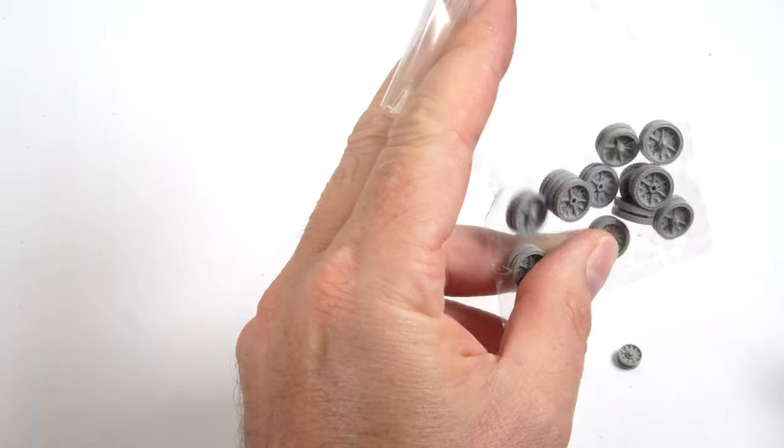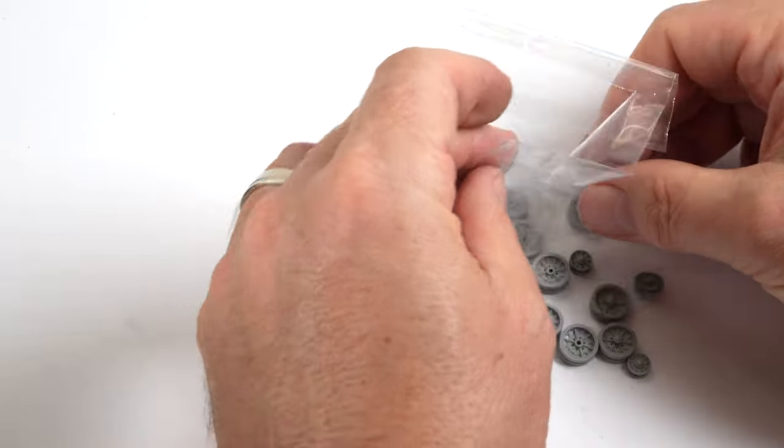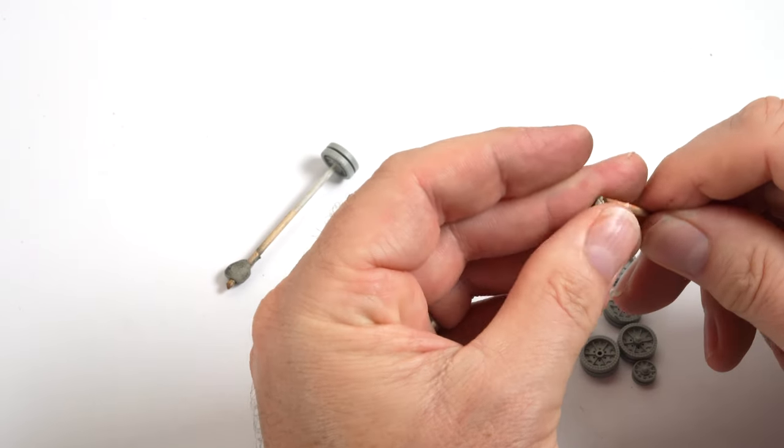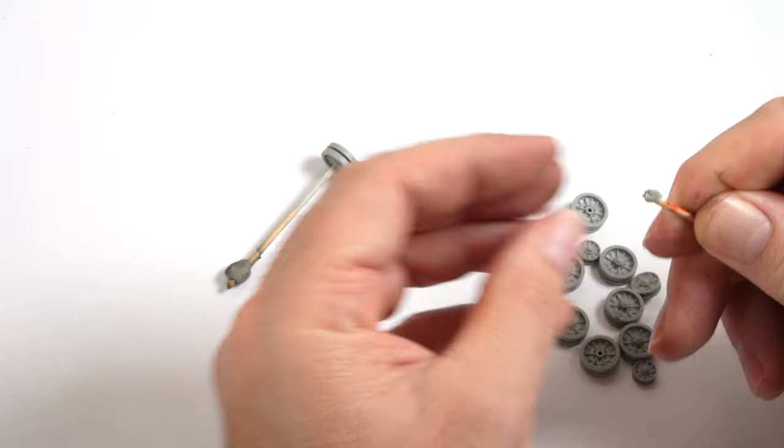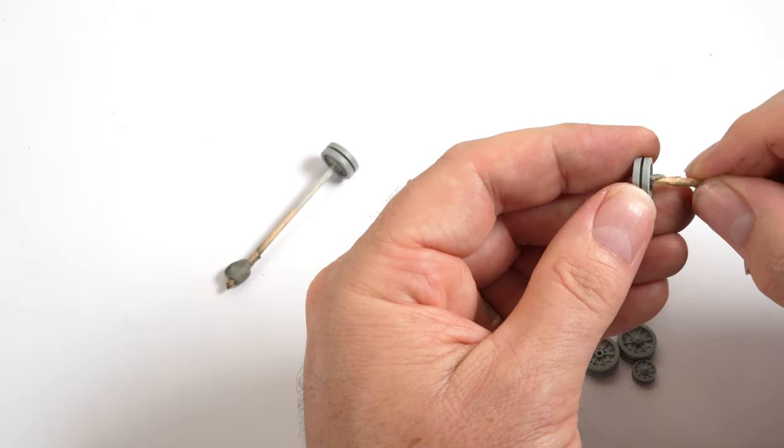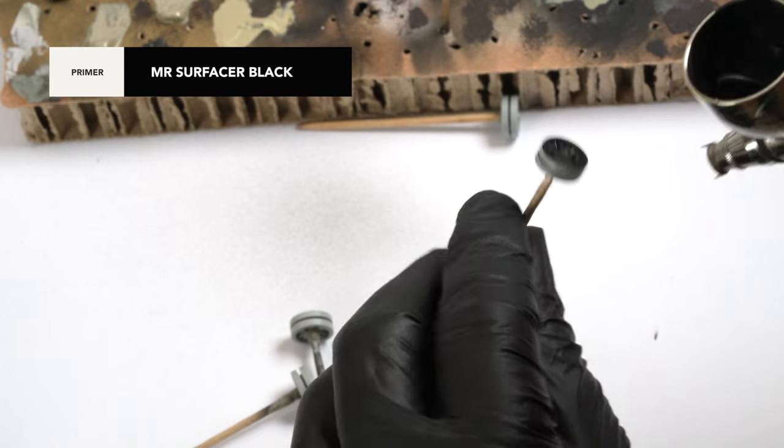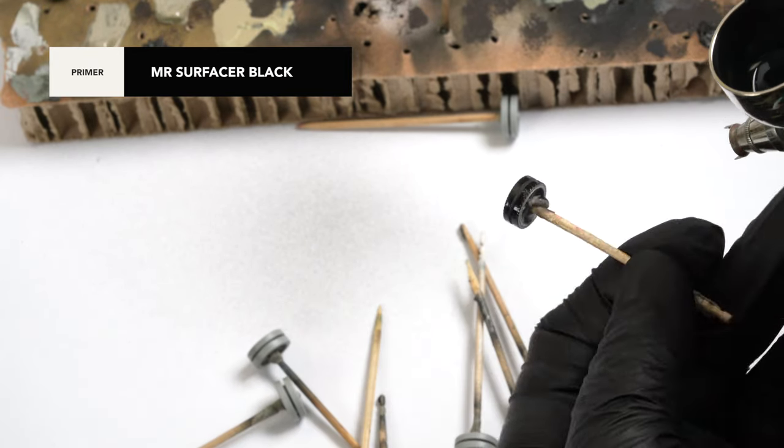Onto the wheels now and they are first prepared for paint by fitting them to toothpicks using a blob of that versatile product blue tack. Having them attached to the toothpicks makes them easier to handle and paint and then set aside to dry. They first undercoat it in a Mr. Surface 1500 black.